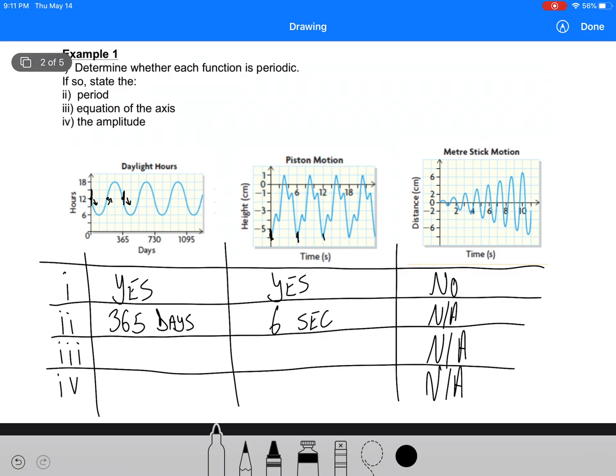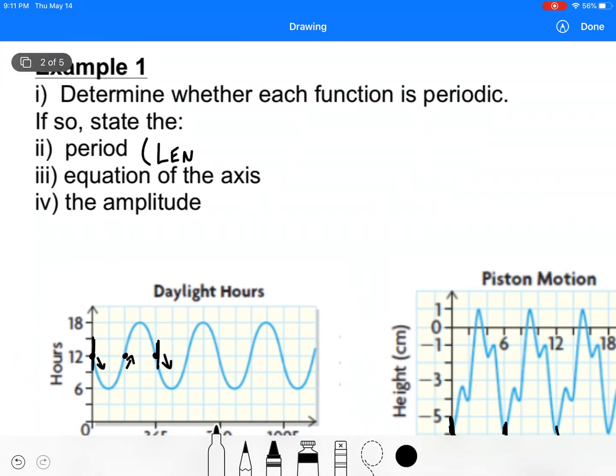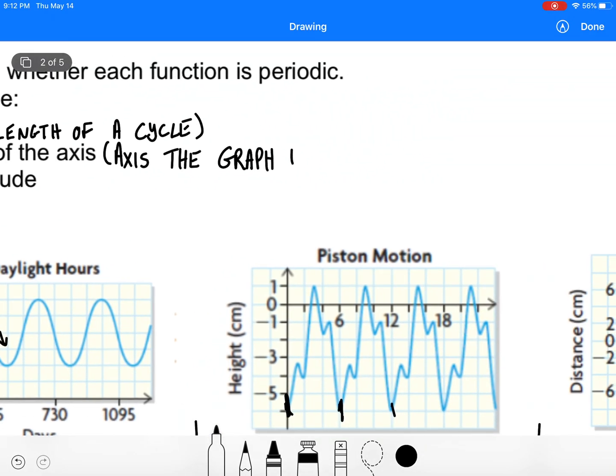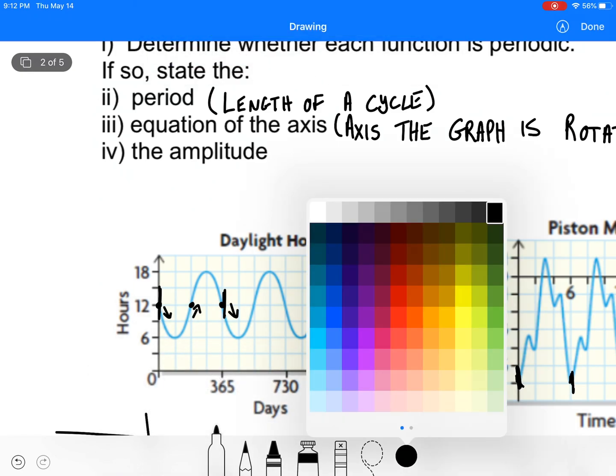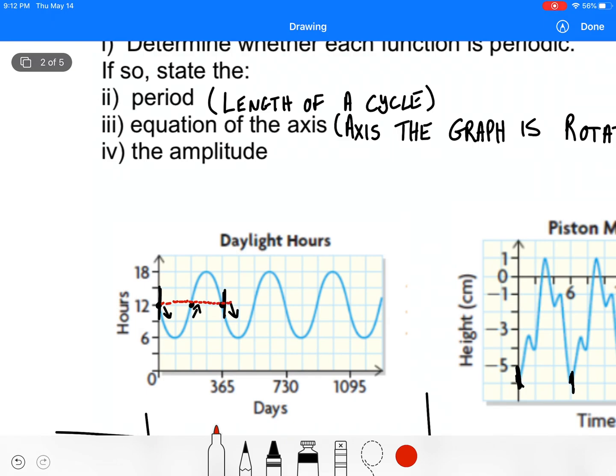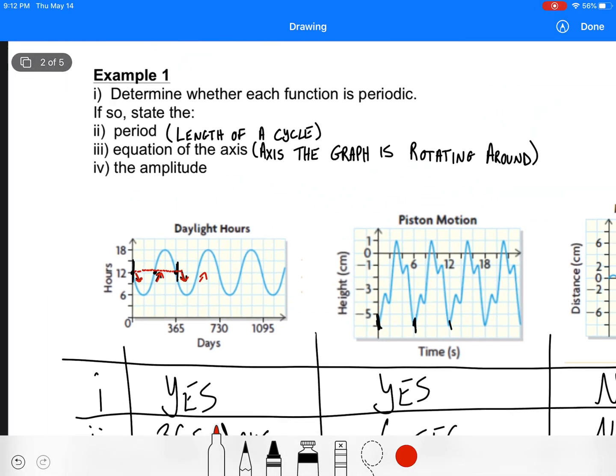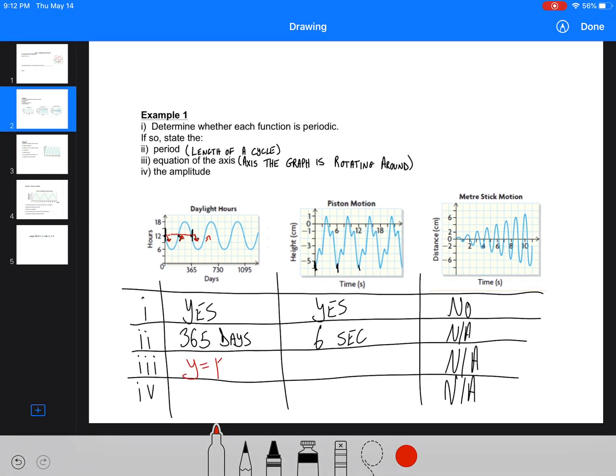The equation of the axis. So the period is the length of a cycle. The equation of the axis is the central axis, so the axis that the graph is revolving or rotating around. So that first graph, if we look at it, it's kind of actually going up and down around this point right here. Because it goes down, then it goes up, then it goes back down, back up, and so on. So it's constantly going around that. So our equation of our axis here is y equals 12, or 12 hours.